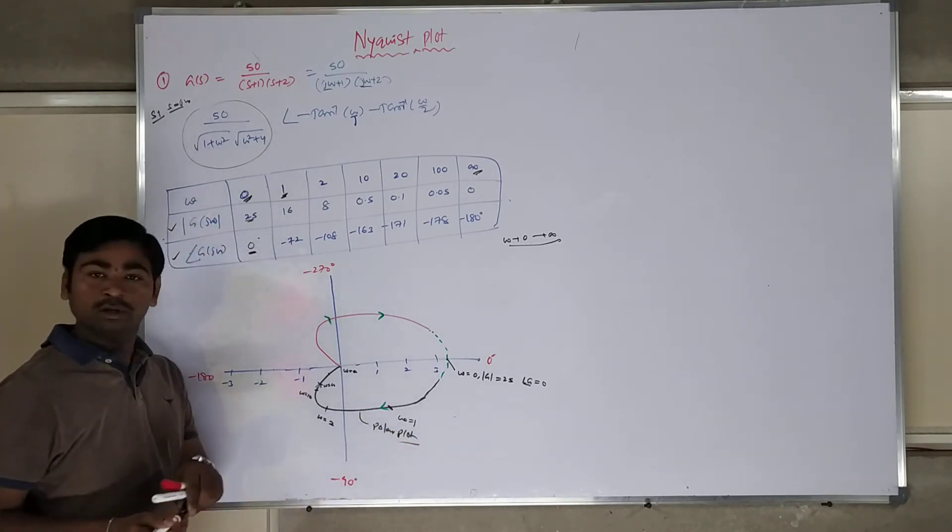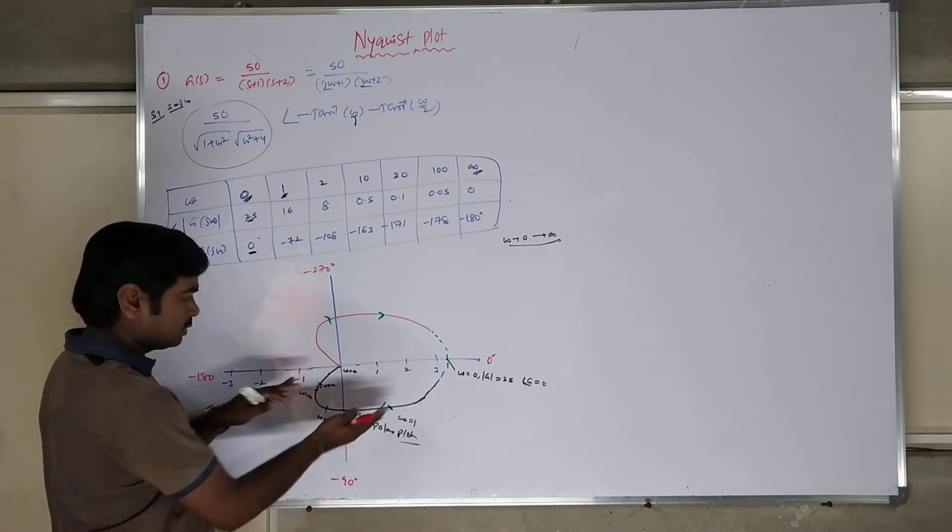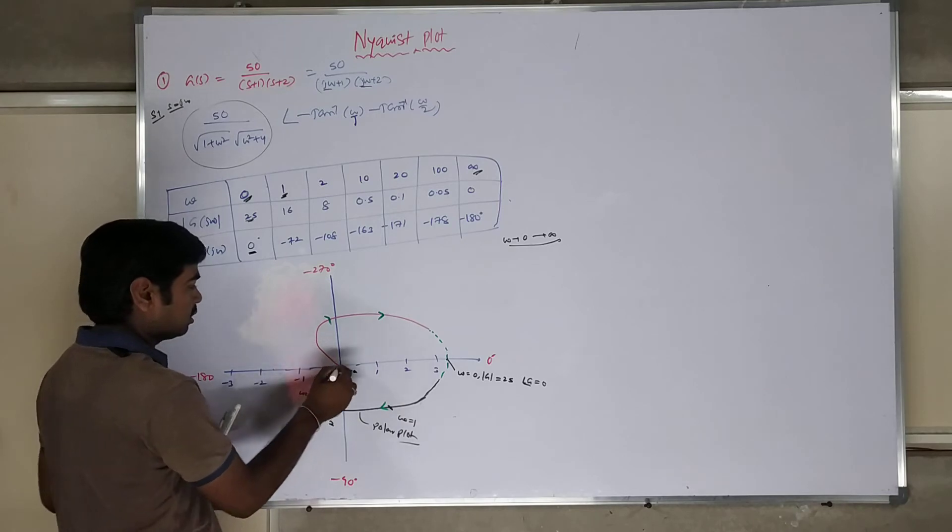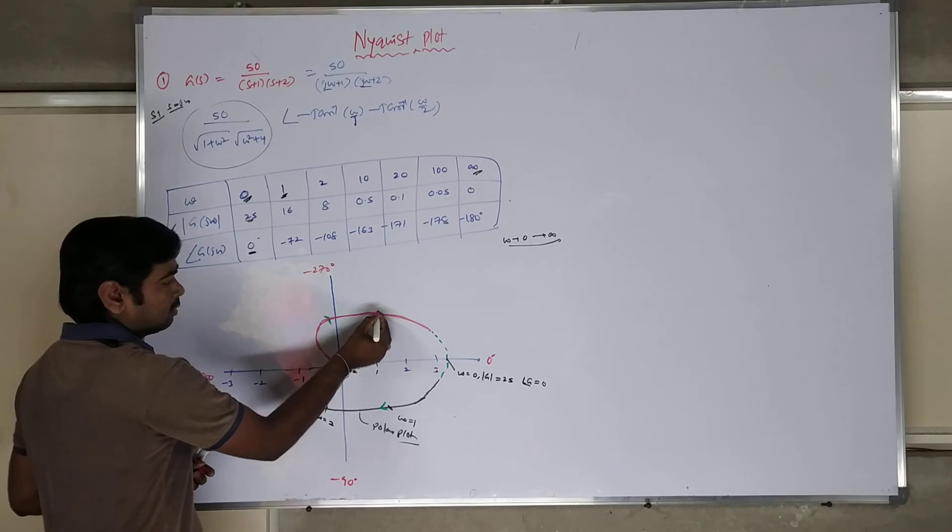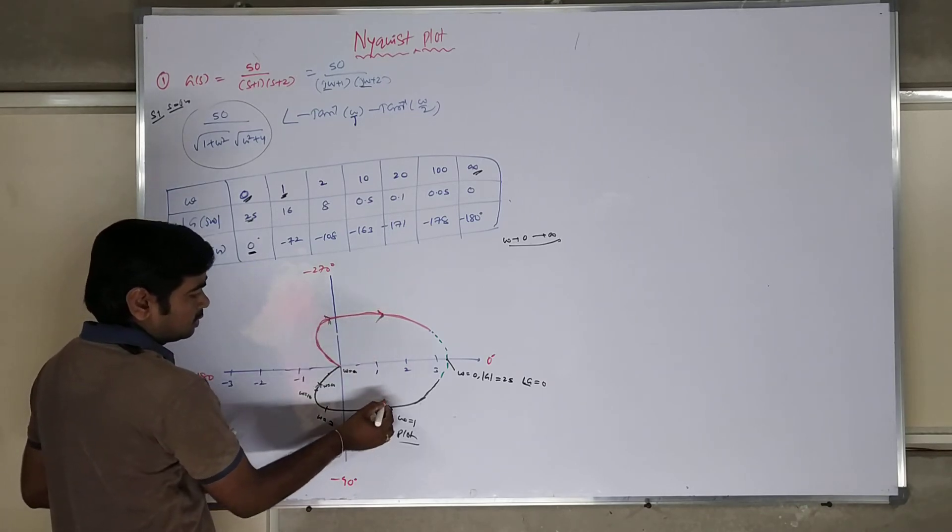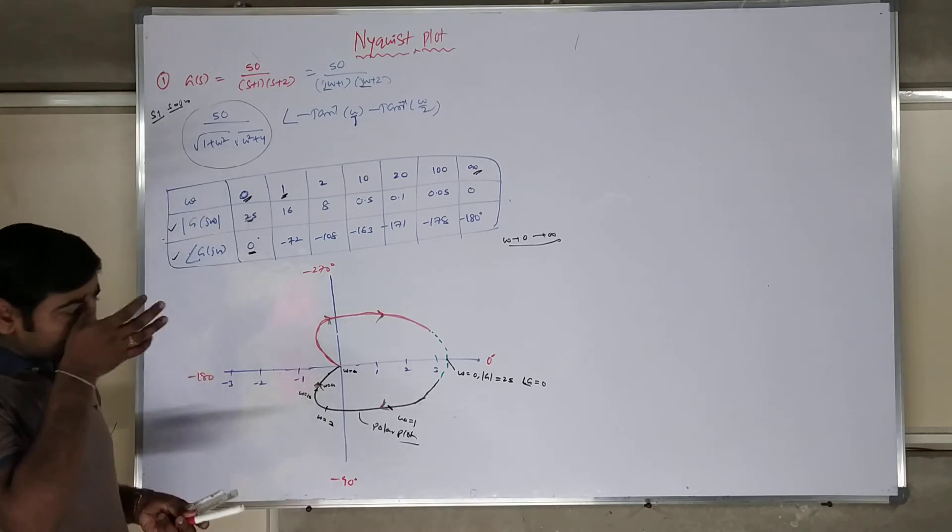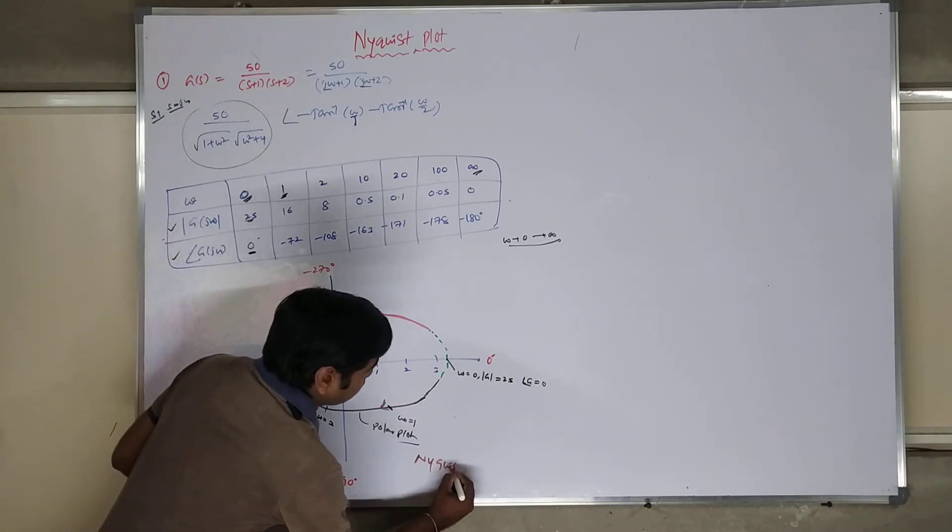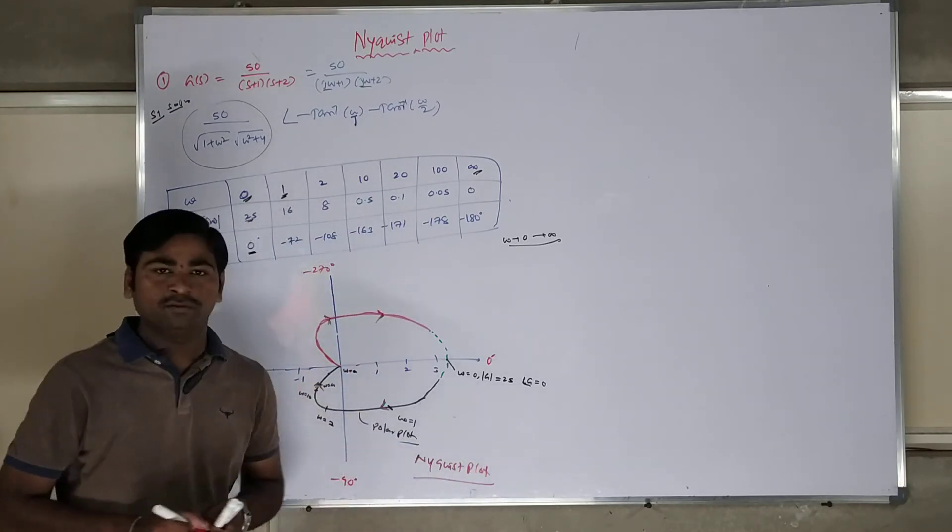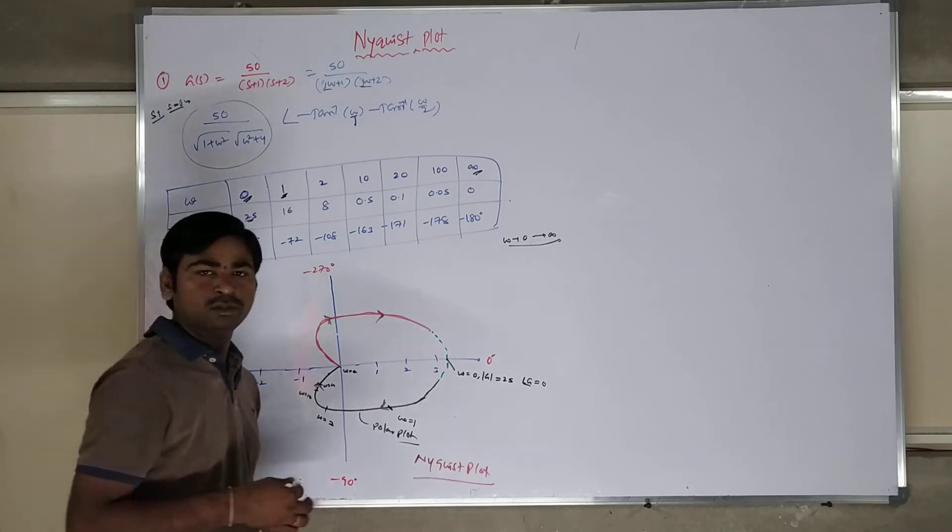After polar plot drawing is over, what you have to do? Draw a mirror image for this one. So this mirror image is shown. So draw your Nyquist plot. This is called Nyquist plot. After that, in a clockwise direction, always this will be in a clockwise direction. It will close your curve. After this is over, it becomes a Nyquist plot.